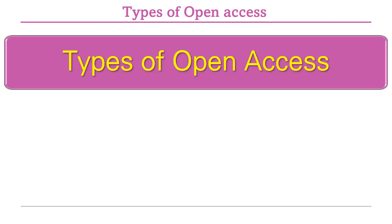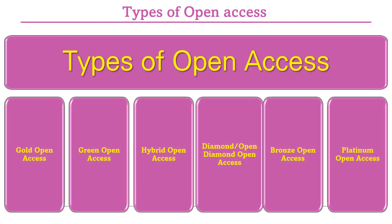There are six different types of open access journals: gold open access, green open access, hybrid open access, diamond open access, bronze open access, and platinum open access.